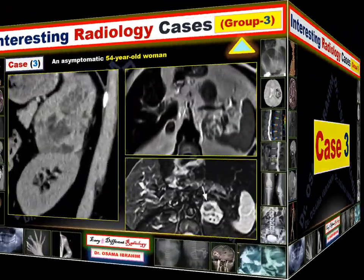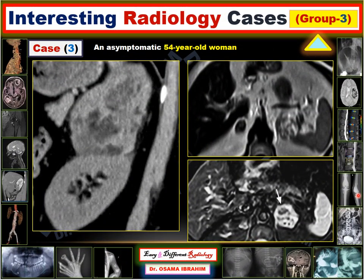Case 3: an asymptomatic 54-year-old woman. There are two examinations — I give you 10 seconds to discriminate the type of examination and identify the lesion.